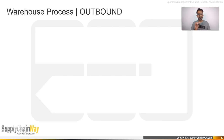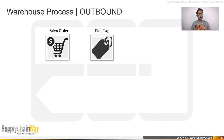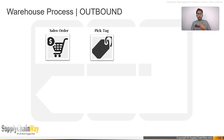Now for the outbound process. It starts with receipt of an order — whether that's a sales order, delivery order, transfer order, or any other type. Once the order reaches the warehouse order processing team, it is processed and pick tags are generated. A pick tag tells the picker: go to a specific location — such as 1A1 or 1A2 — pick this quantity, and bring it to the outbound staging area.